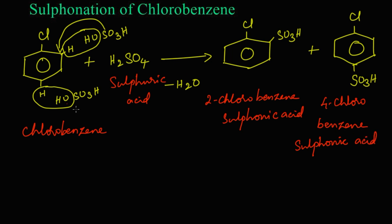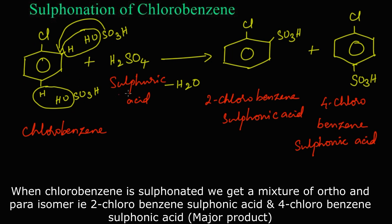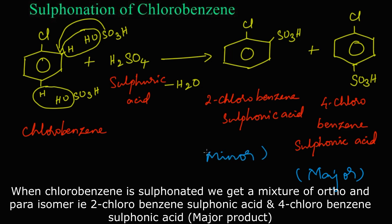To summarize: when chlorobenzene is sulfonated — that is, concentrated sulfuric acid is added to chlorobenzene — we get a mixture of products: the ortho isomer, 2-chlorobenzene sulfonic acid, and the para isomer, 4-chlorobenzene sulfonic acid. The major product is the para isomer and the minor product is the ortho isomer. Thank you.